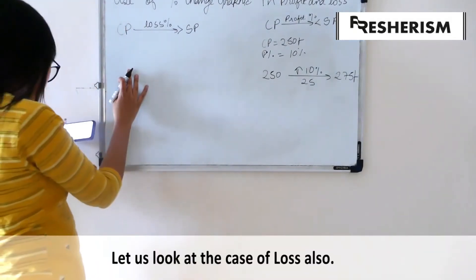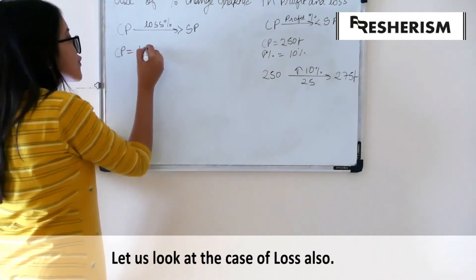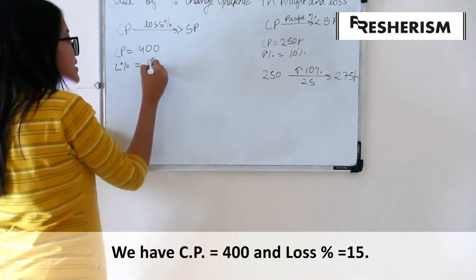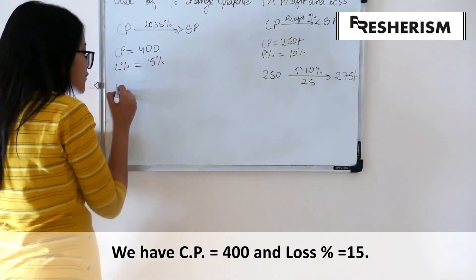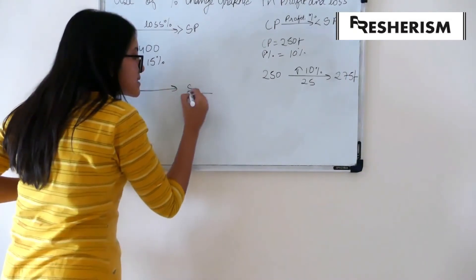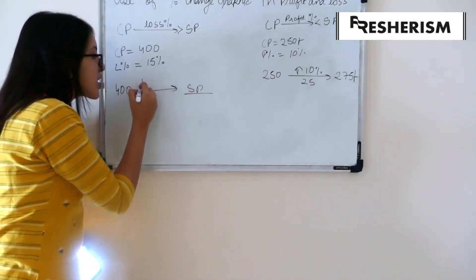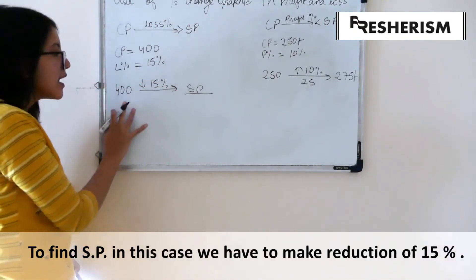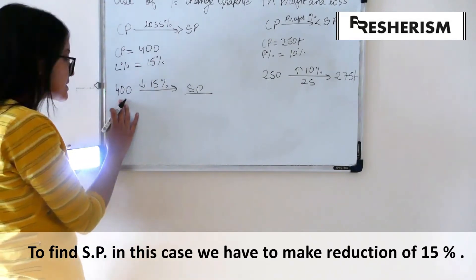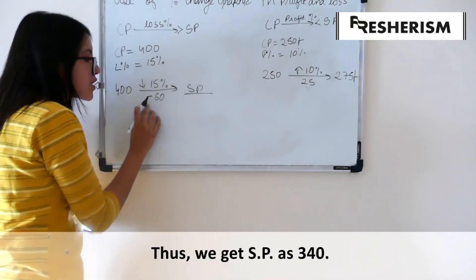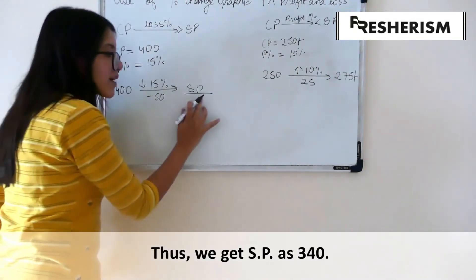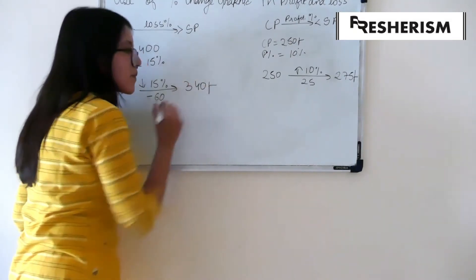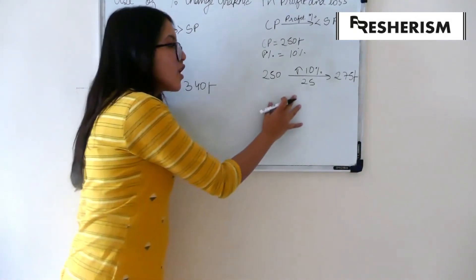Let us take an example for this as well. If my cost price is equal to 400 and my loss percentage is equal to 15% then to go from 400 to my selling price I will have to make a reduction of 15% from 400. Now, 15% of 400 is 60. Hence, I will reduce 60 from this amount to get my selling price which will be 340. This is a very small example of this concept.